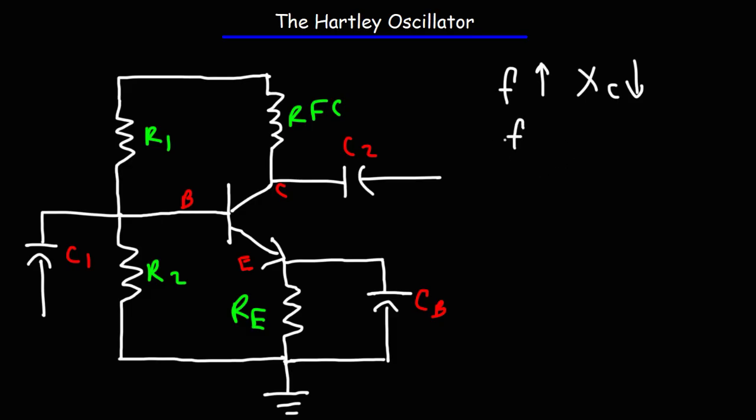As the frequency decreases, the capacitive reactance increases. So if you're trying to design a low frequency Hartley oscillator circuit, you want to increase the value of C1 and C2, because as C goes up, the capacitive reactance goes down. And that's how you can compensate for the increase in capacitive reactance when dealing with low frequency signals.